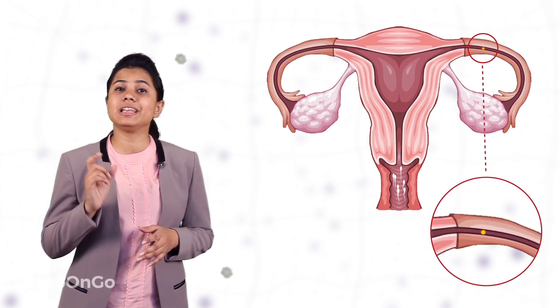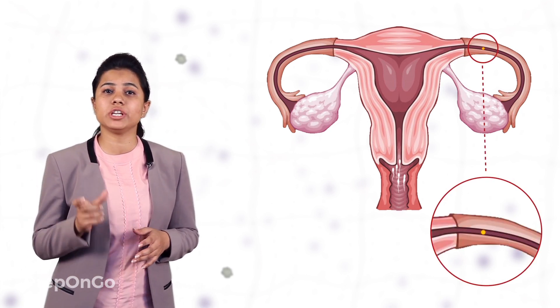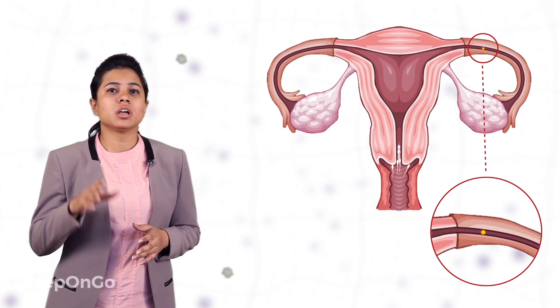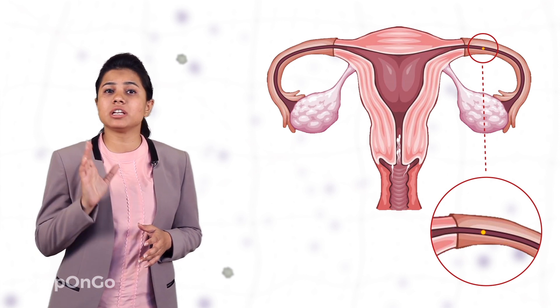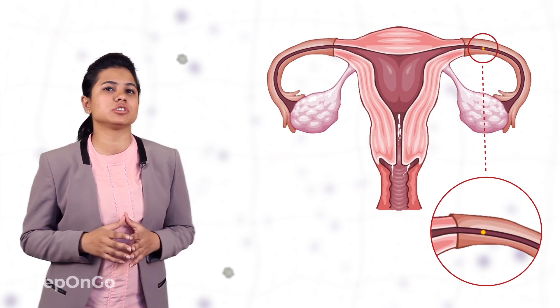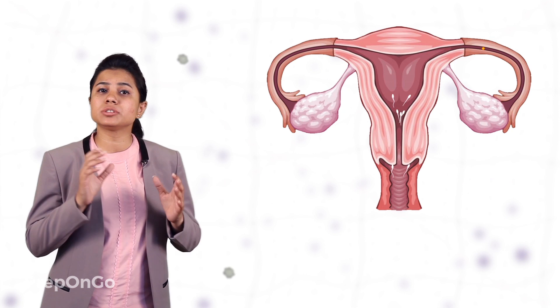The egg released by the ovary is present in the oviduct. The egg is released by the ovary during the process of ovulation.